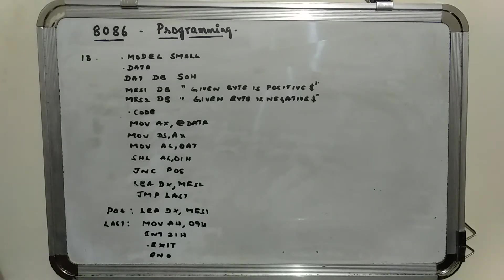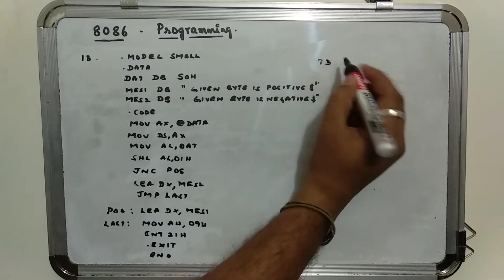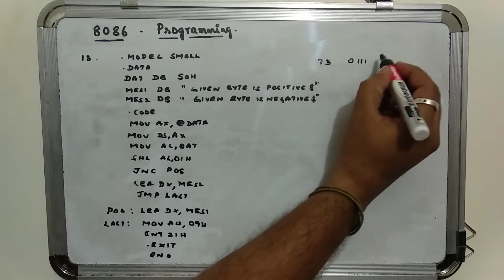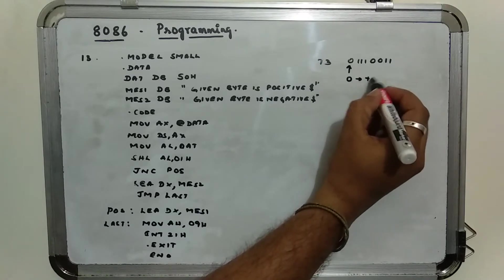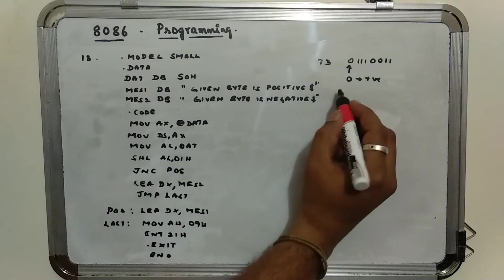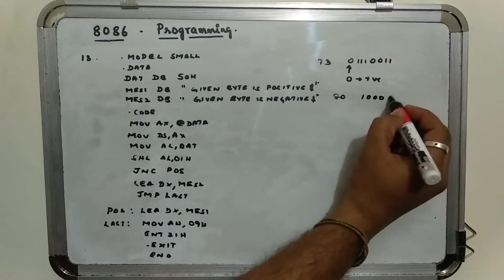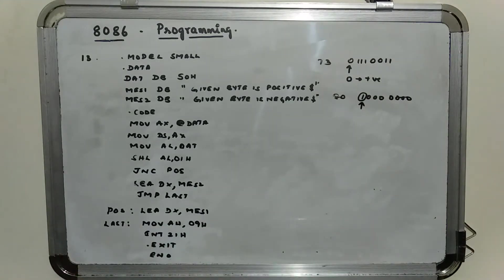In this program we will find whether the given byte is positive or negative. The logic used here is: we take an example of number 73, represented in binary as 0 1001001. We check the MSB bit — if it is 0, it is a positive number, and if it is 1, it is a negative number. For example, for a negative number like 80h (10000000), the MSB is 1, so we get the byte as negative.